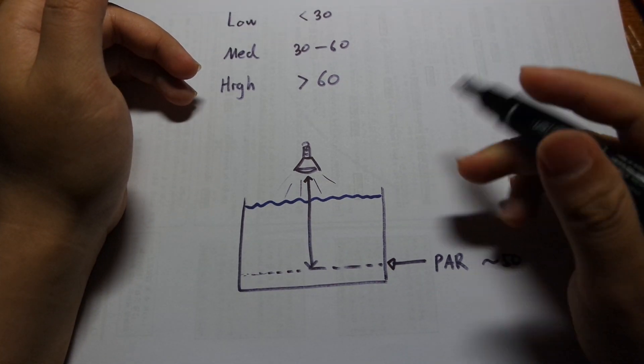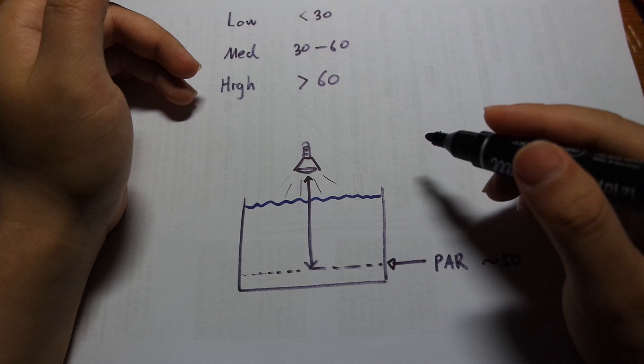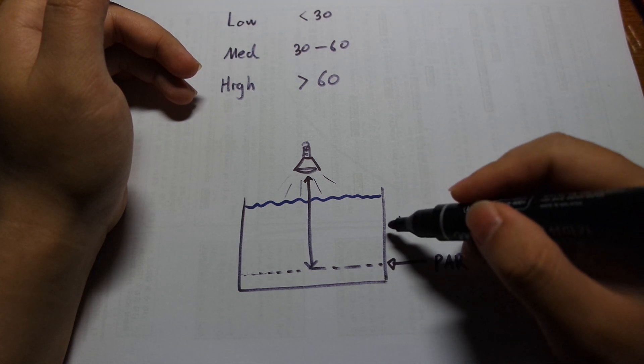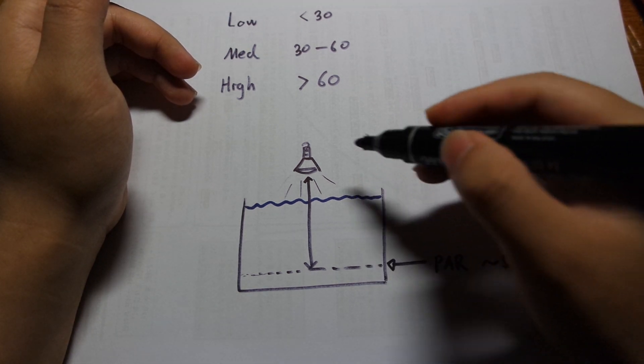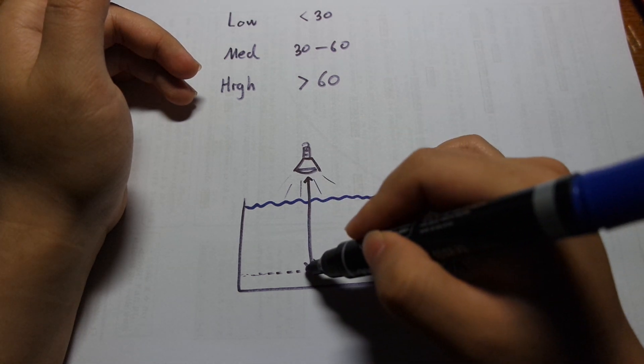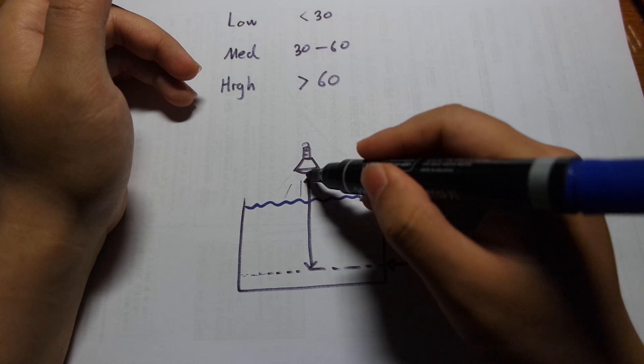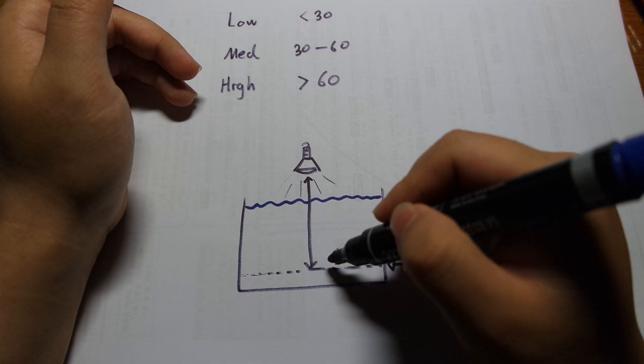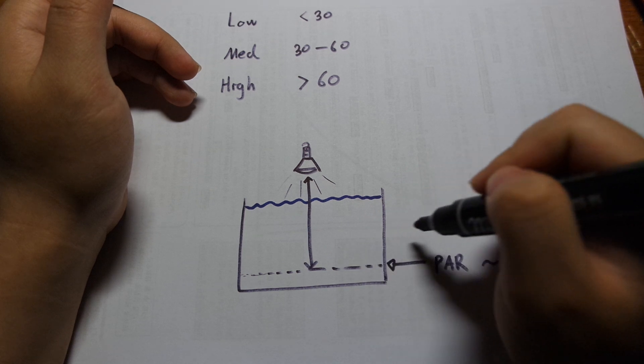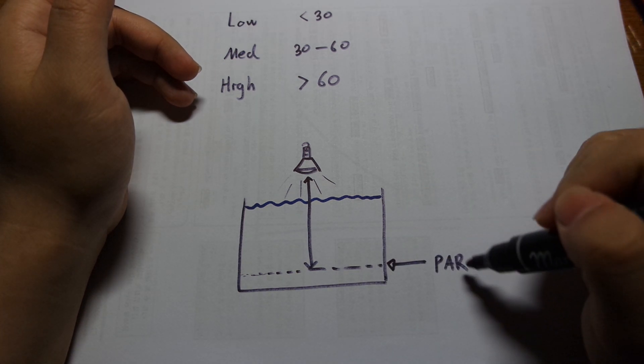And of course, light decreases over distance. So you should measure out how you're going to set up the tank and about the depth of your substrate that you're going to have. And you're going to measure that distance from the light source to the bottom of the tank. And you should check if the PAR at that level is somewhere around 50.